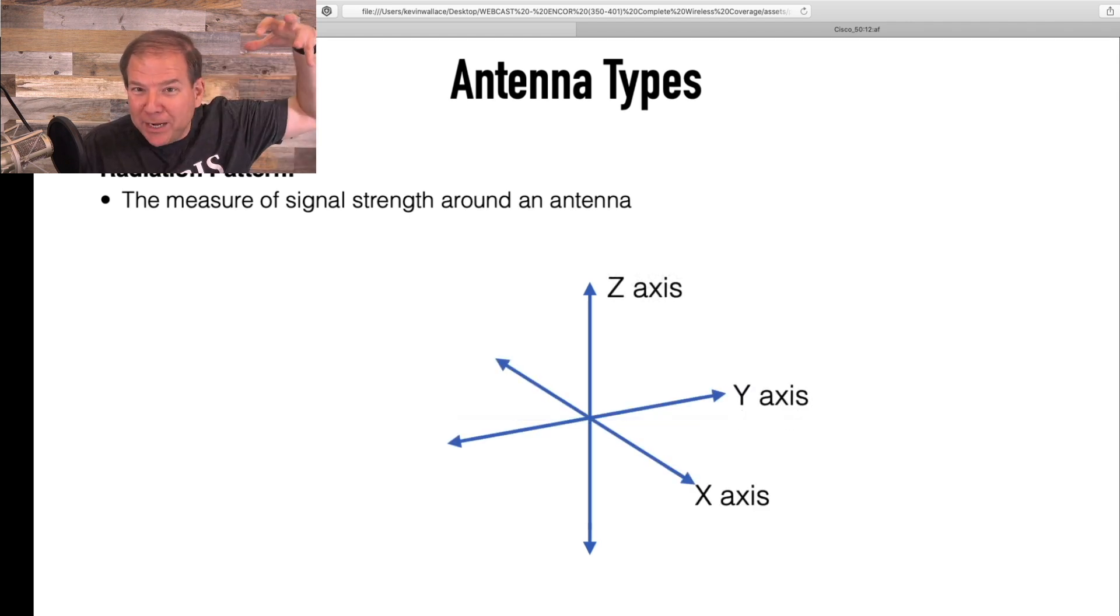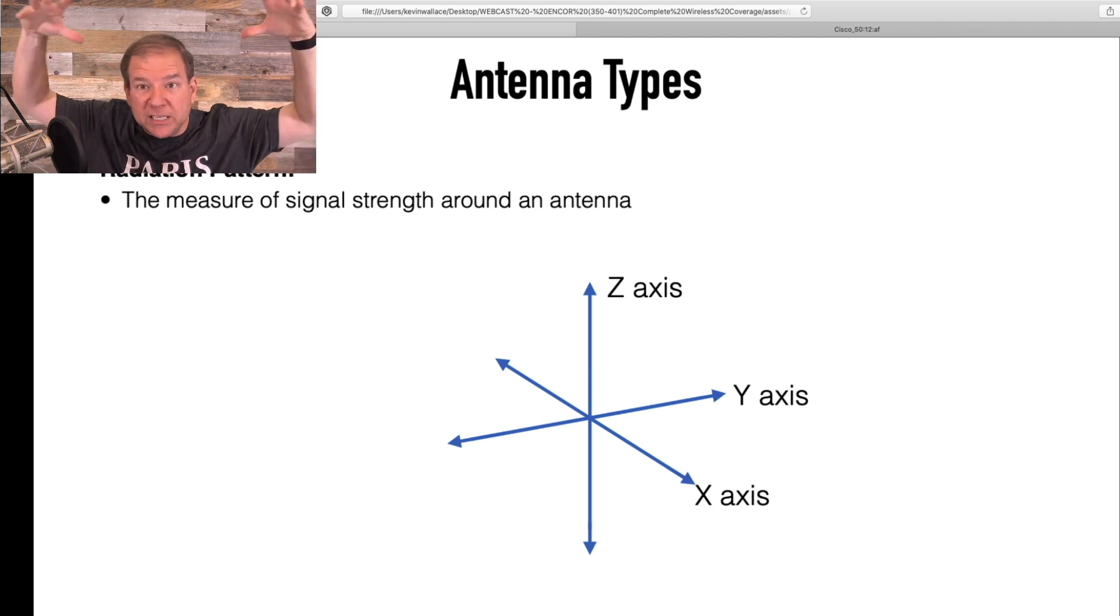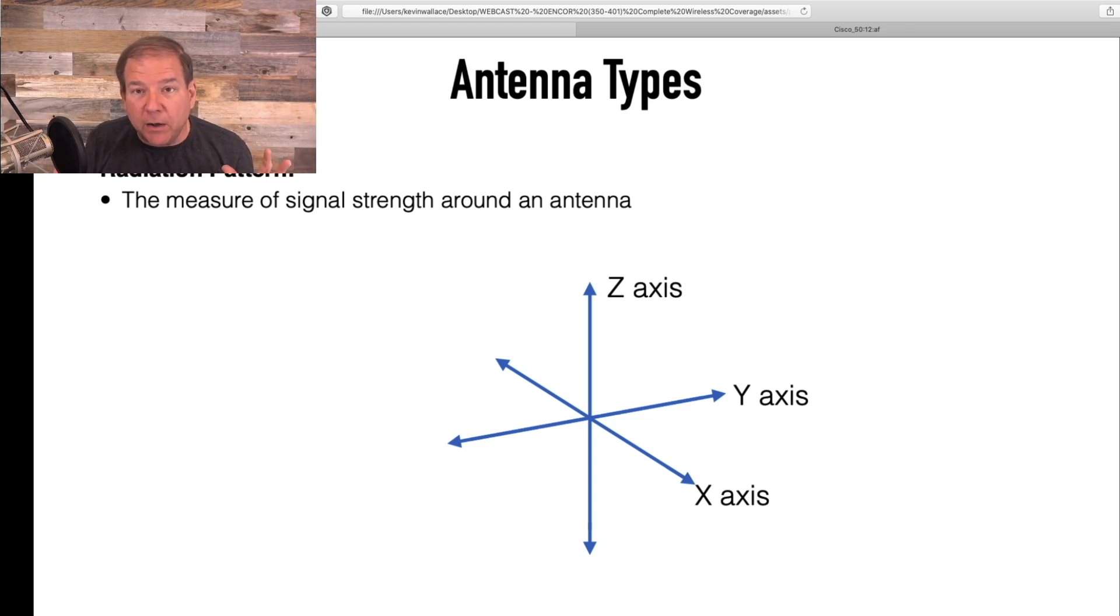And in this third dimension, we can visualize these shapes like a beach ball, a big beach ball. That's sort of a spherical shape. That's sort of the coverage area of one of our antenna types that we're going to be talking about. So we want to visualize these 3D shapes.